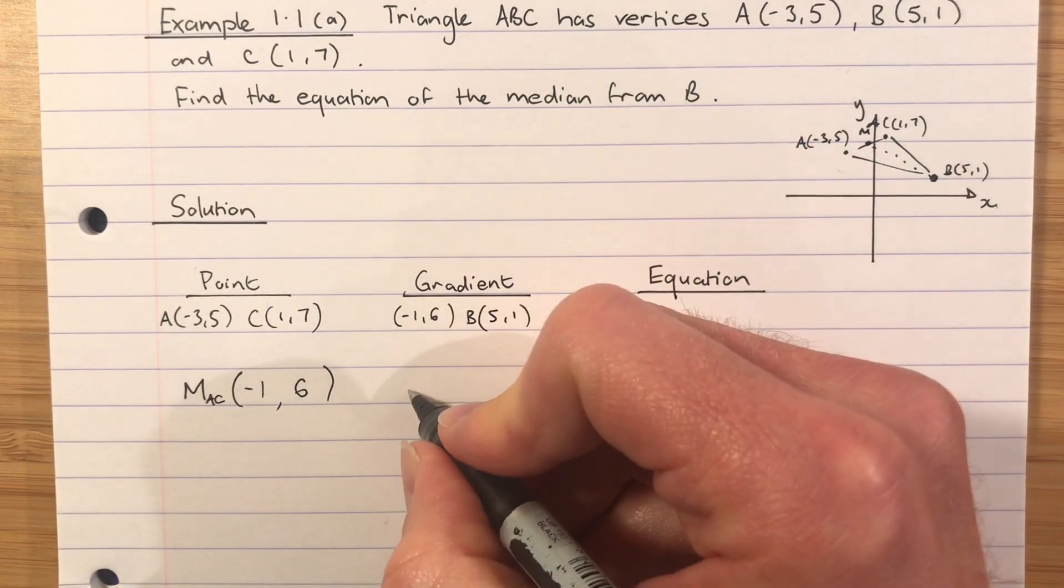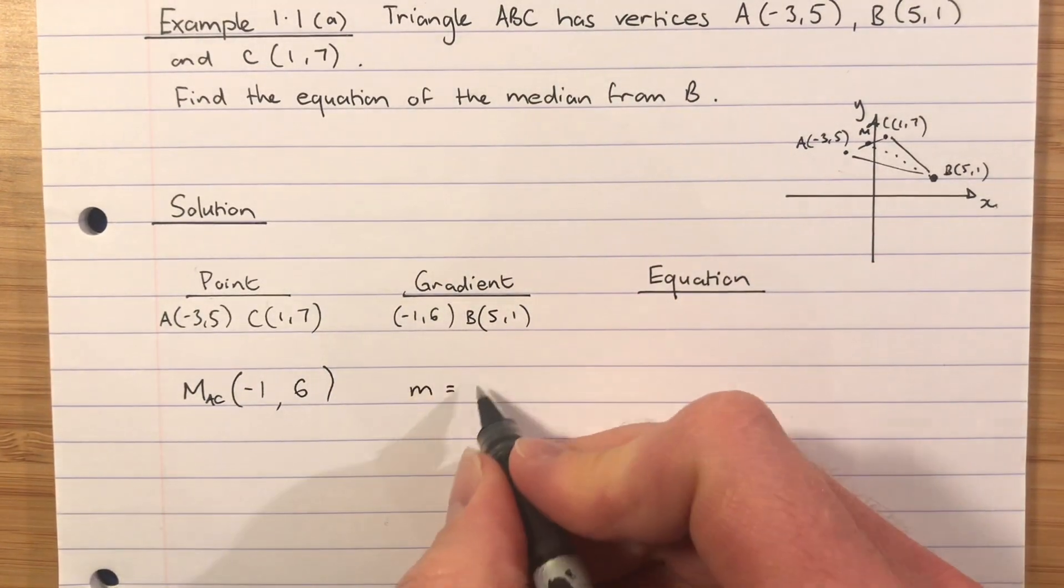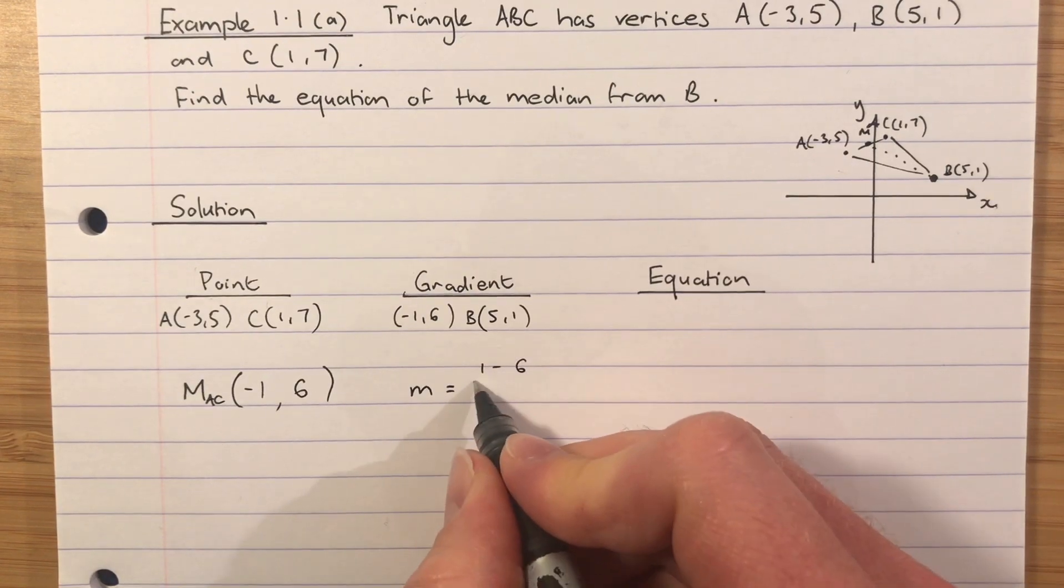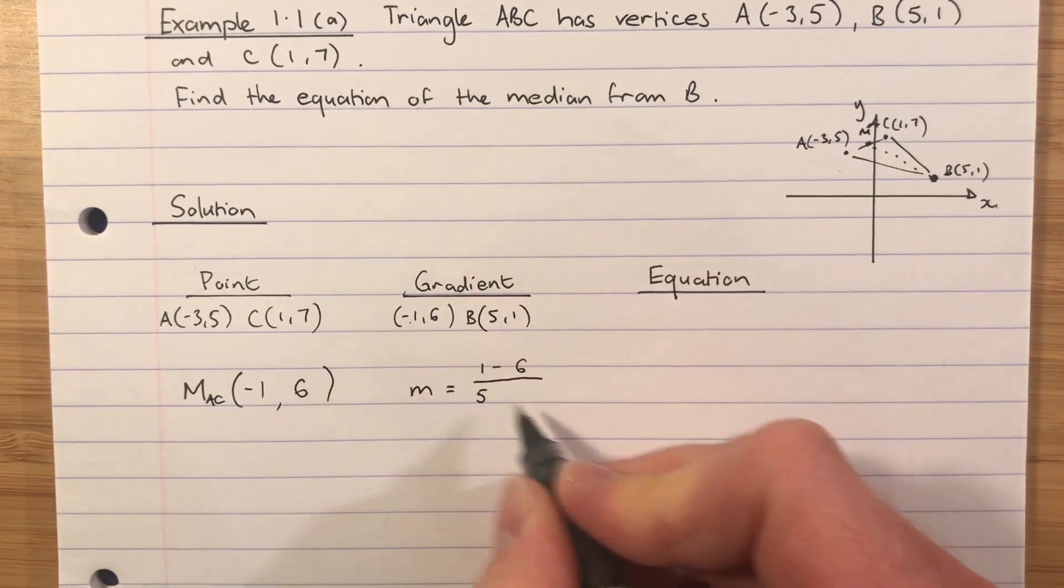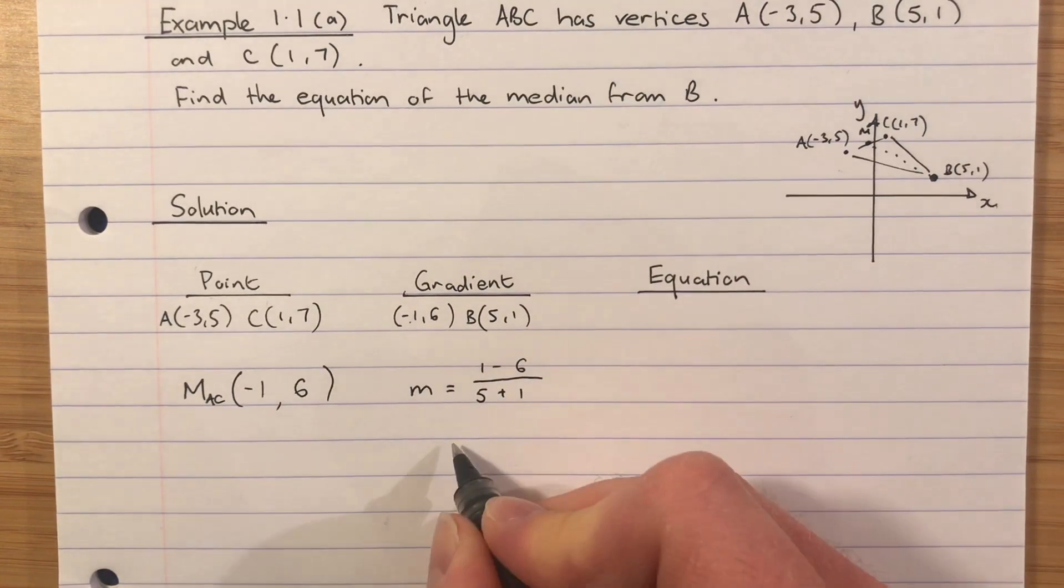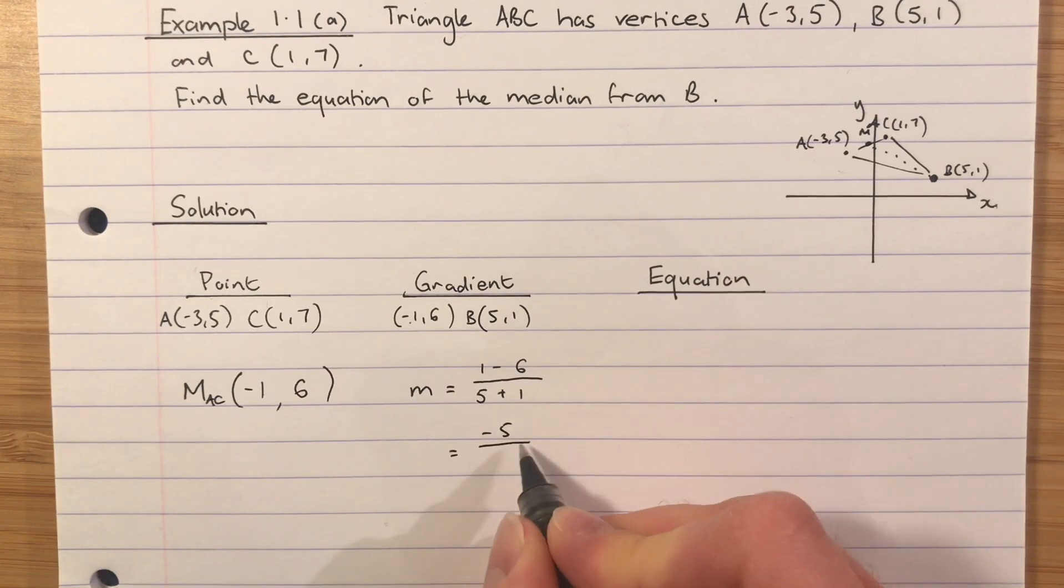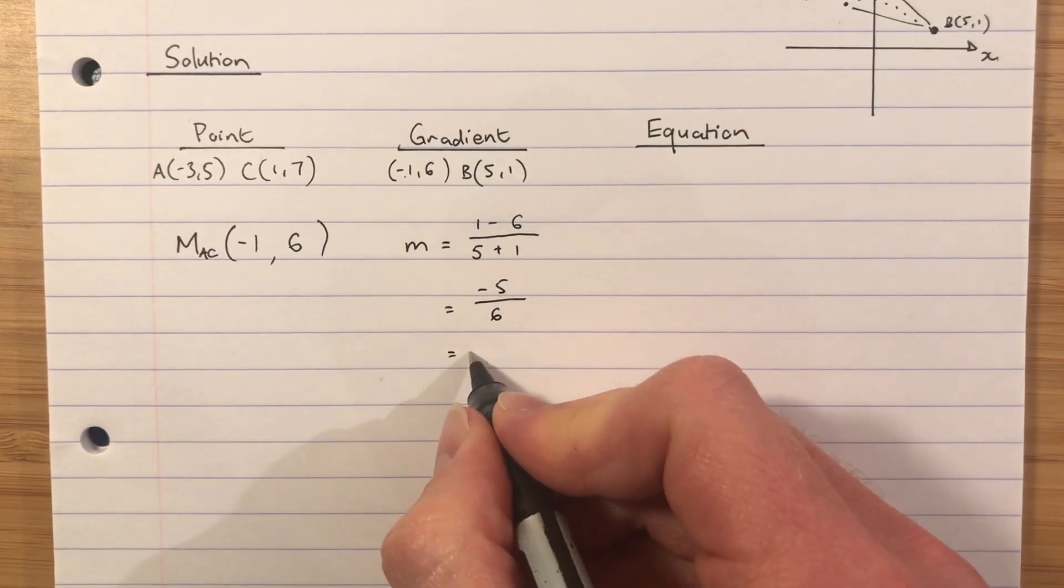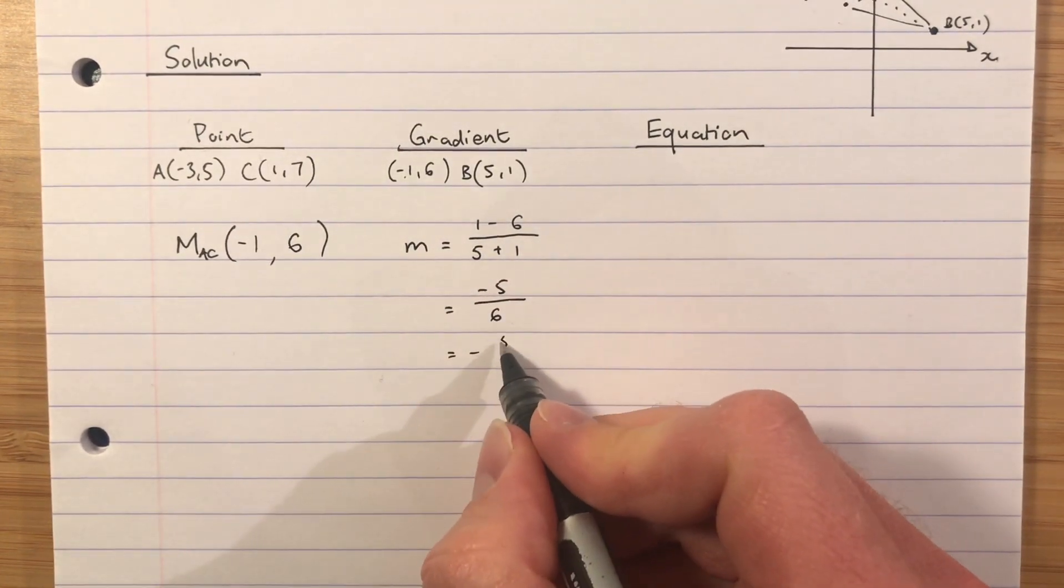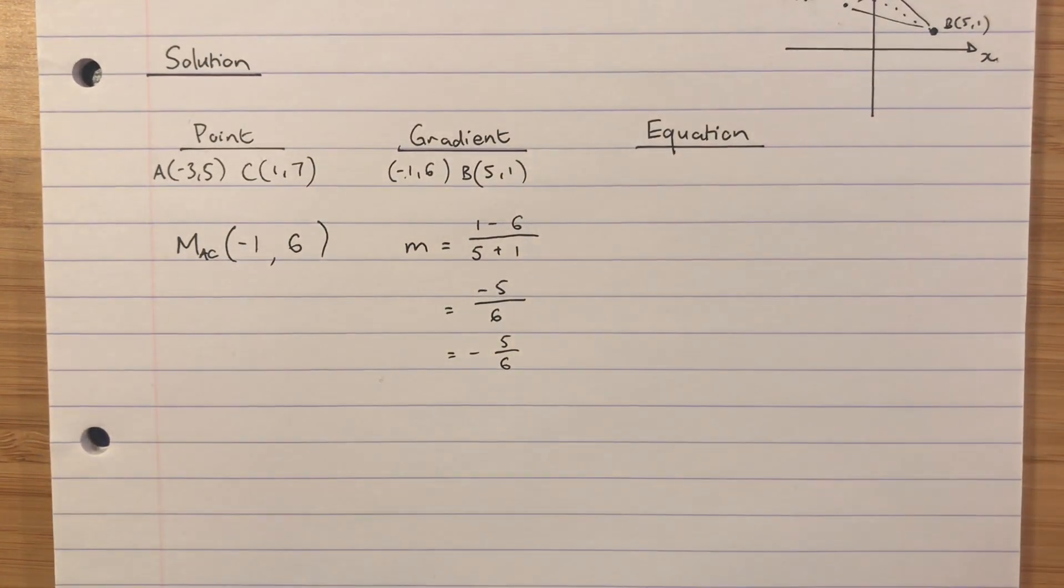Small m for gradient. 1 subtract 6 on the top, 5 subtract -1 on the bottom. Remember, subtracting negative is the same as adding. 1 - 6 = -5. 5 + 1 = 6. So just for the avoidance of any doubt, I'm going to rewrite that gradient, making sure the whole thing is negative: -5/6. Negative divided by positive makes the whole thing negative.